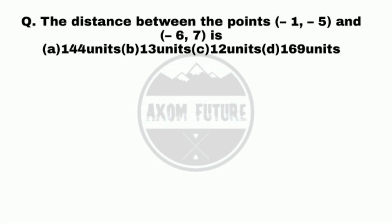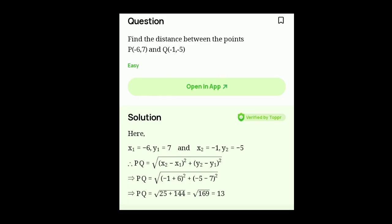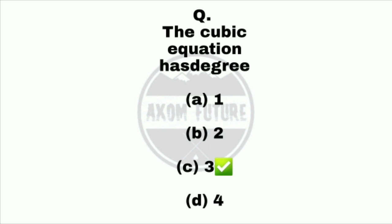Equation 4. The distance between the points minus 1, minus 5, and minus 6, 7 is? Equation 4: the cubic equation has degree. The right answer is C, 3.